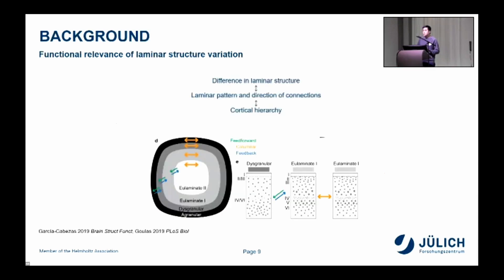Another important functional relevance of laminar structure is that, again mostly in animal studies, it has been observed that the difference of laminar structure between two regions relates to the laminar pattern and direction of their connectivity — whether it is feedback, feedforward, or lateral — which is important for cortical hierarchy, or the relative distance of these regions across the cortical hierarchy. So variation of laminar thickness relates to cortical hierarchy.